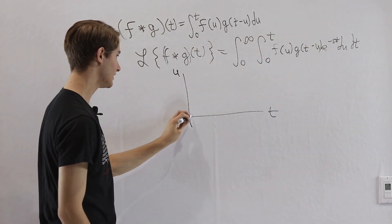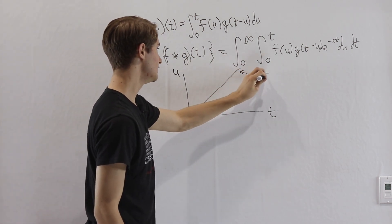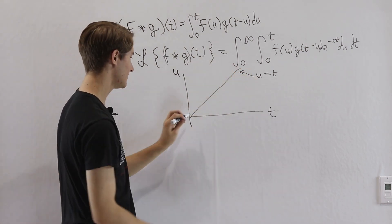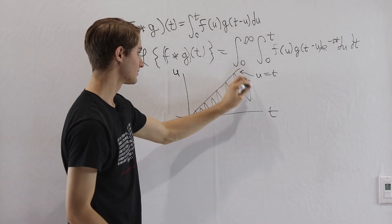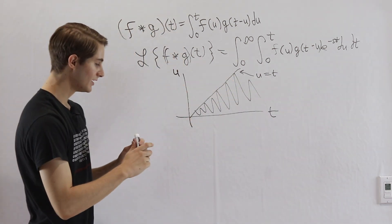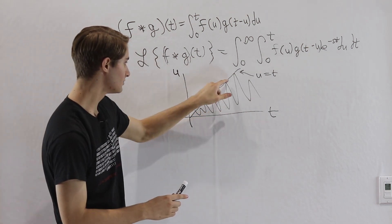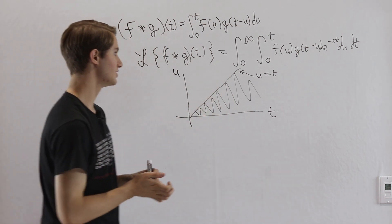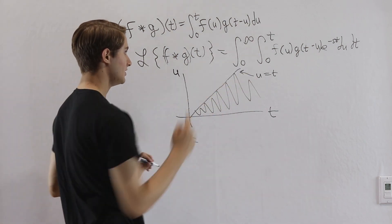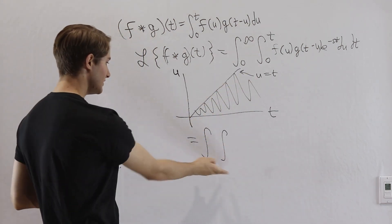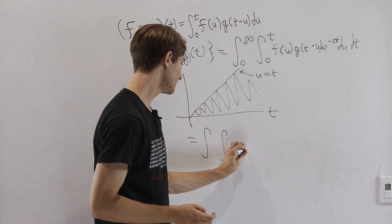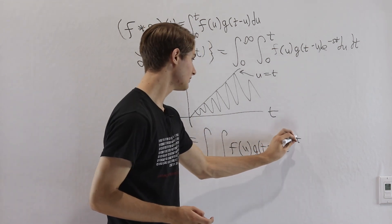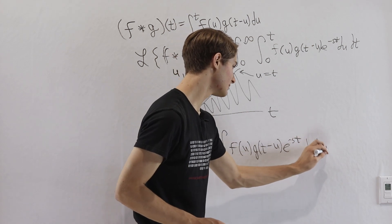If we think about the line u equals t, our integral goes over the area where u is less than this line. t goes all the way out to infinity, and u starts at 0 and increases to whatever t equals at that particular slice. When we switch the order of integration, we integrate first with respect to t and then with respect to u.